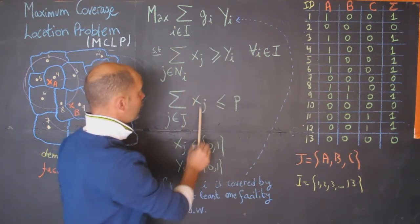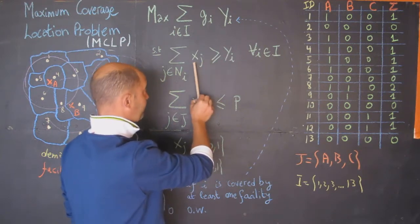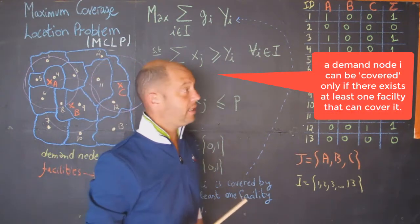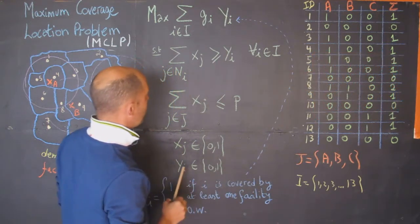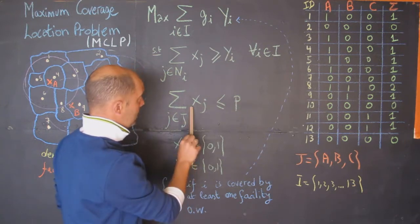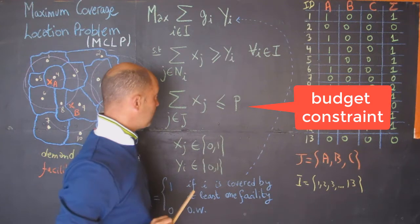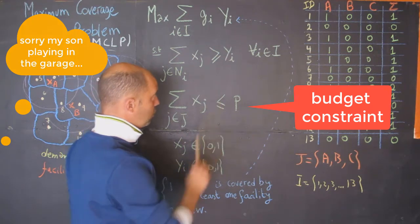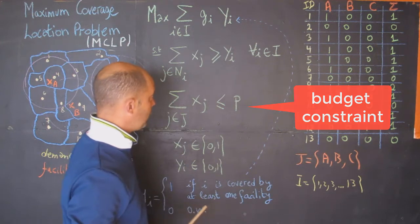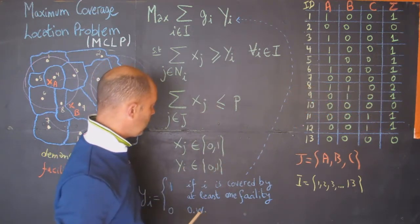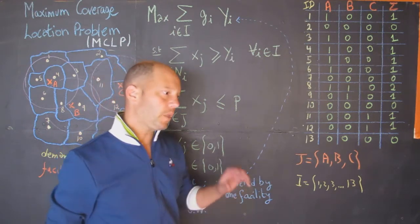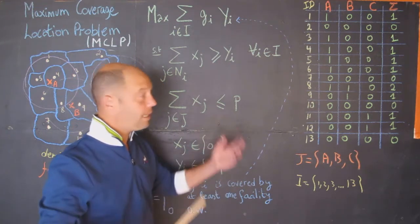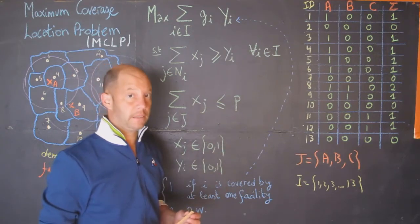This is subject to a set of constraints. The first constraint is that a demand node can be covered only if there is at least one facility in its area that can cover it, and that applies to all demand nodes. The second constraint limits the number of facilities we can have: the summation over all j's (all facilities) should be less than or equal to p. P is the budget that determines how many facilities we can open. Then we have the regular integer constraints.